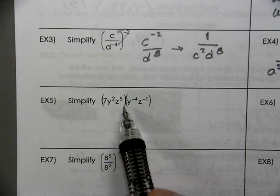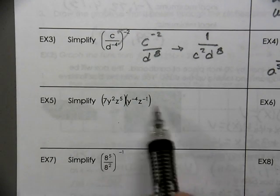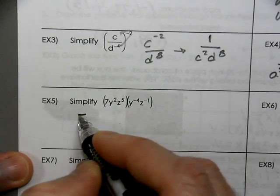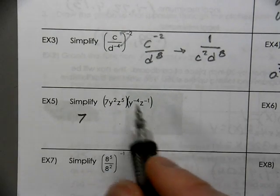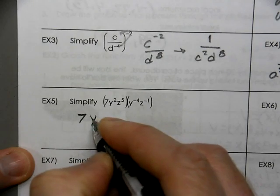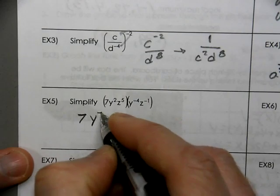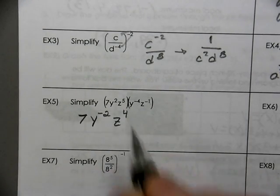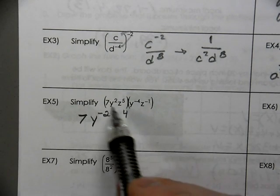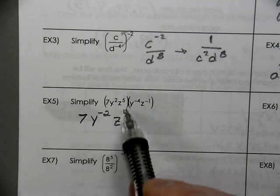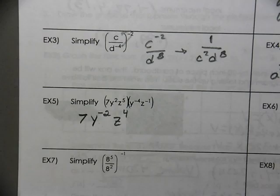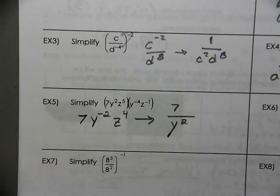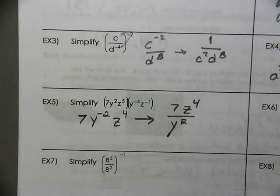Now here with the parentheses, you're multiplying the terms that are the same. There's no coefficient for the other one, so it's 7 times 1, which is 7. For the y's, when you multiply y's together you add exponents: 2 plus negative 4 leaves you with negative 2. For the z's, 5 plus negative 1 leaves you with 4. This is not FOIL — you just multiply your like terms. Since the y has a negative exponent, it goes to the bottom, while the 7 and z stay on top.